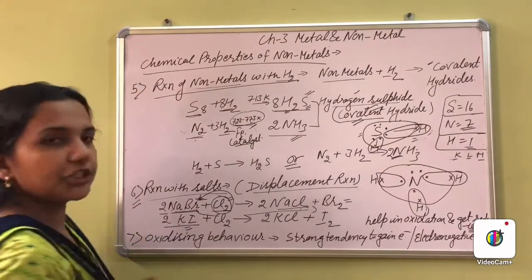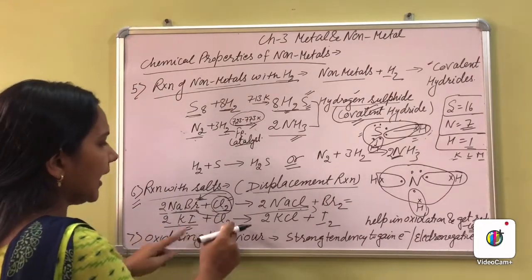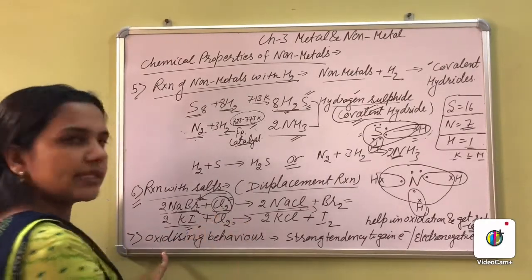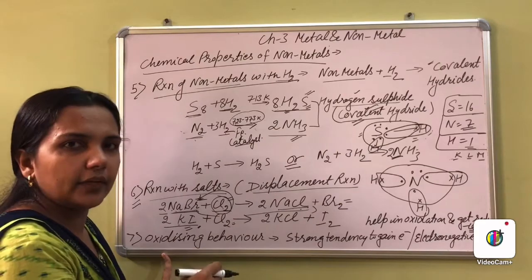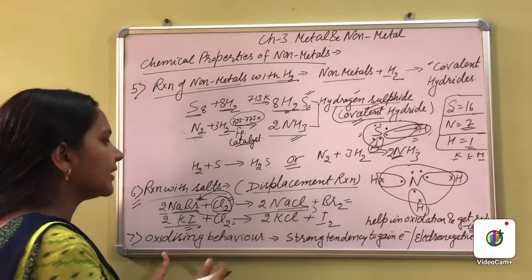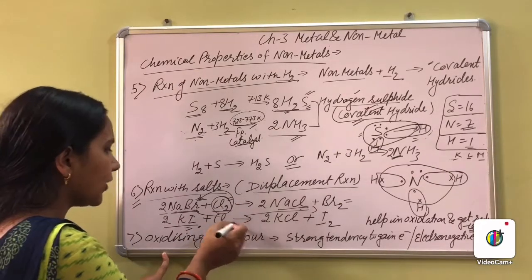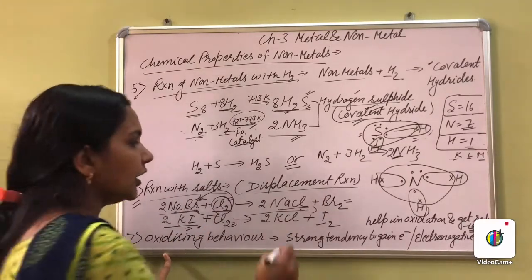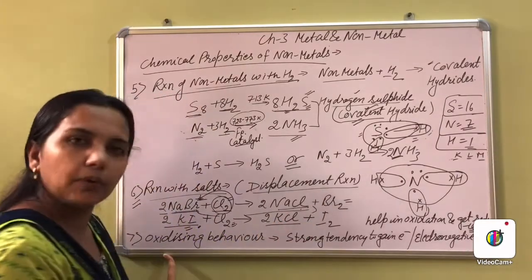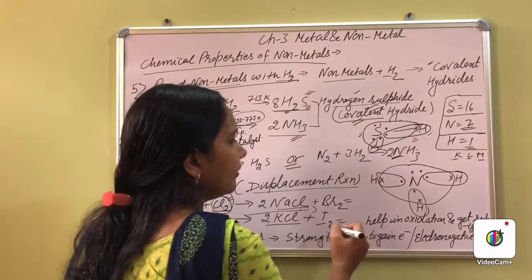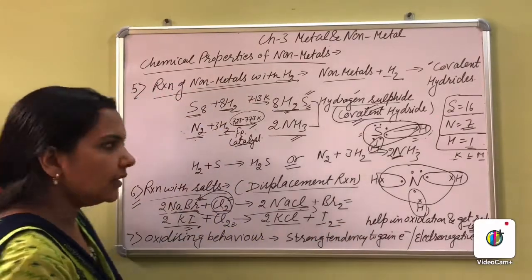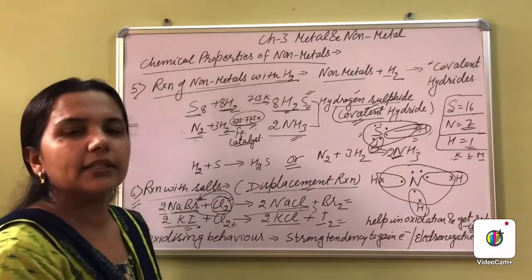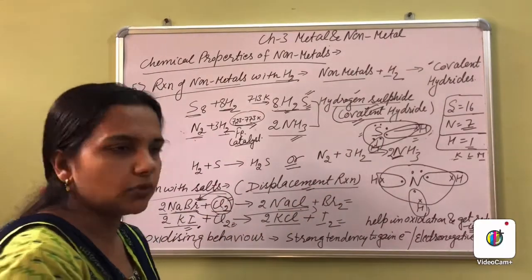Then there is potassium iodide — also a salt — and the non-metal chlorine. According to the reactivity series, chlorine is more reactive than iodine. So iodine will be displaced from the salt solution, formation of potassium chloride will occur, and iodine will be displaced. In this way the displacement reaction occurs whenever non-metals react with different types of salts.